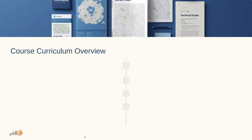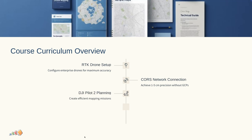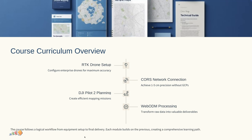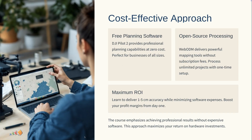So based on your feedback, I'll be creating a course that focuses on mapping with enterprise RTK drones, achieving 1 to 5 cm accuracy using an RTK connection to a CORS network, planning missions in DJI Pilot 2 (which is free), and processing data in WebODM (which is free or low cost). I'll be creating it all tailored for beginner to intermediate users with a commercial certification. I'll also be covering everything from mission planning and setup to data processing and through to how to deliver to clients, ensuring you can deliver accurate and reliable mapping results — all without breaking the bank.